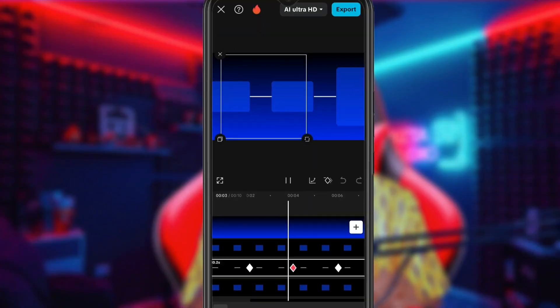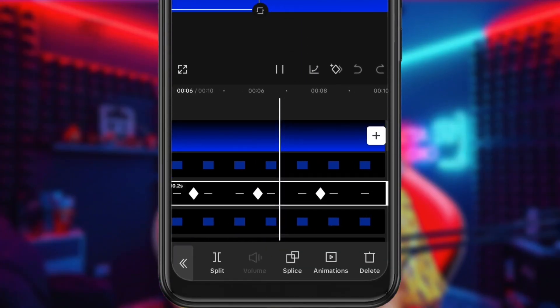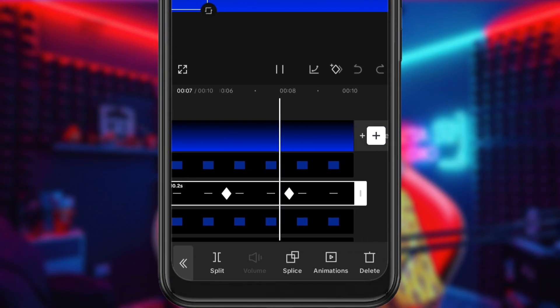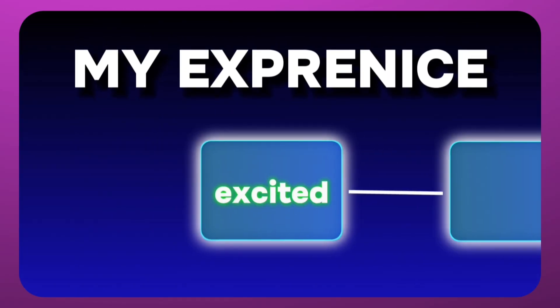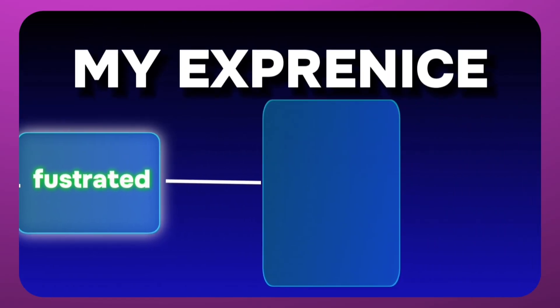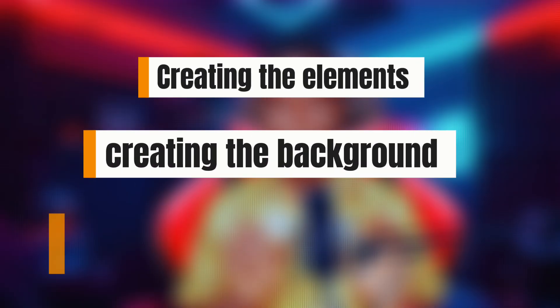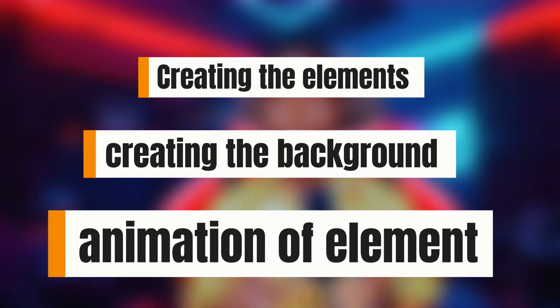Let's learn how you can create this simple motion graphic using just your mobile phone. To create something like this, we are using just three simple steps: number one, creating the elements; number two, creating the background; and number three, animating it using keyframes on CapCut mobile.